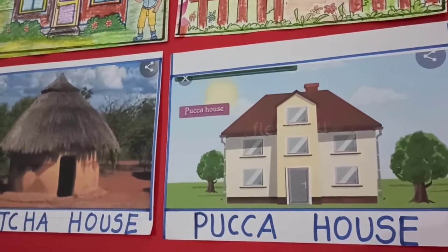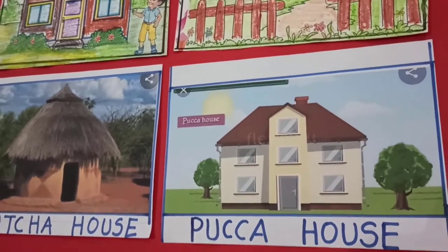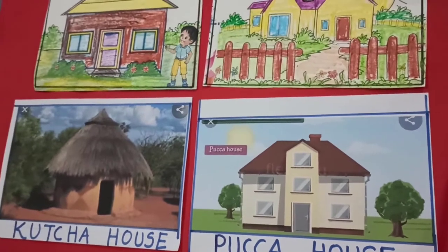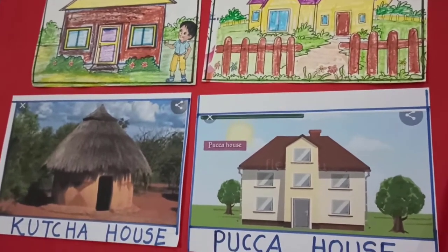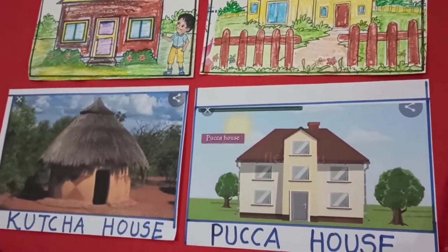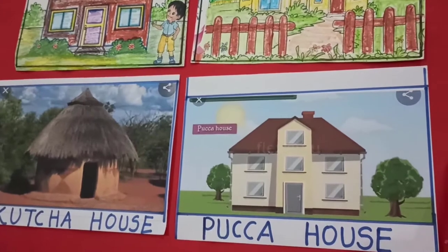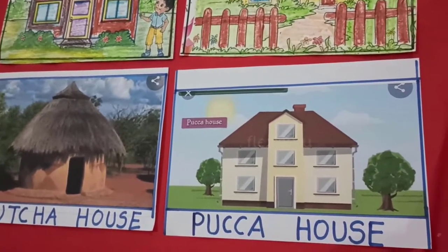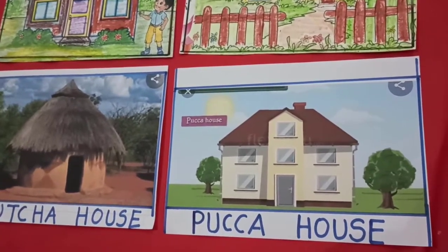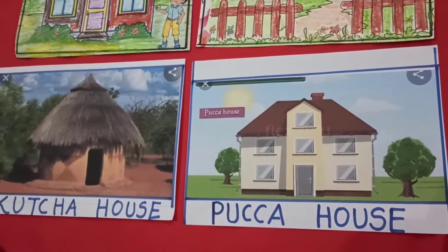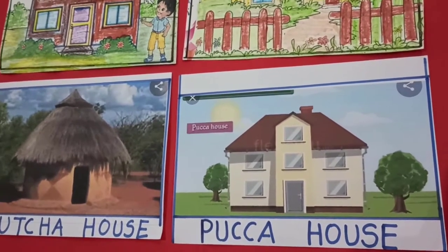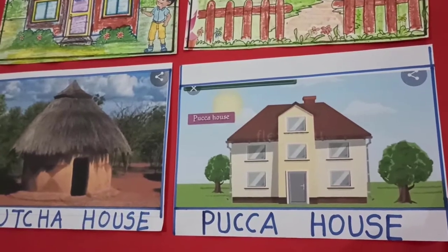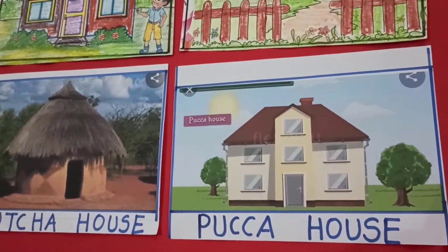Hello children. Today our concept is different parts of the house. First of all, where we live in, we eat together, drink together and watch television together. We enjoy together with our family. That is called our house.